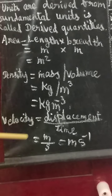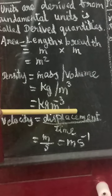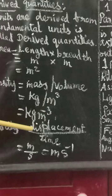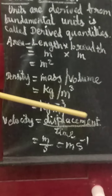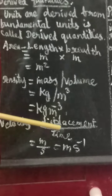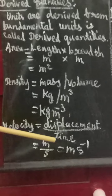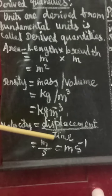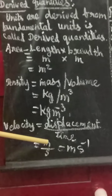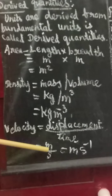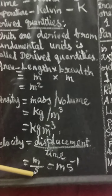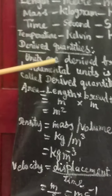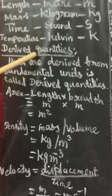Next, velocity. The formula for velocity is displacement divided by time. Displacement means an object moved from its original place to a particular place — that change of position is displacement. The unit of displacement is meter and the unit of time is second, so velocity is meter per second, otherwise written as meter second to the minus 1. This is a derived quantity, derived from the fundamental quantities.